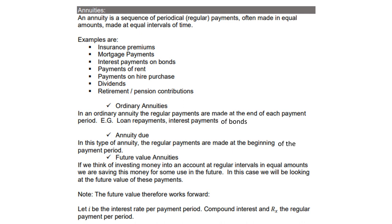Let's look at annuities. An annuity is a sequence of periodical or regular payments, often made in equal amounts, made at equal intervals of time.